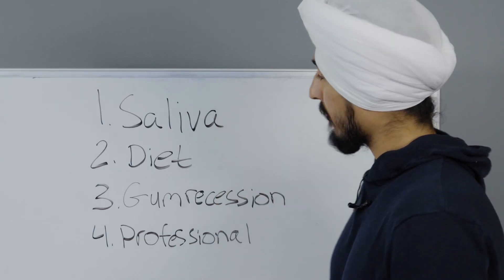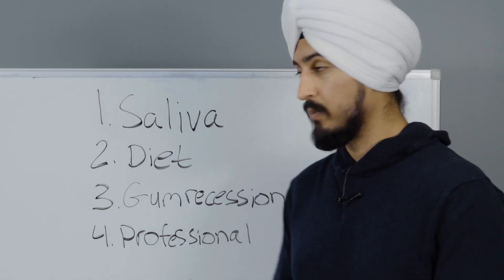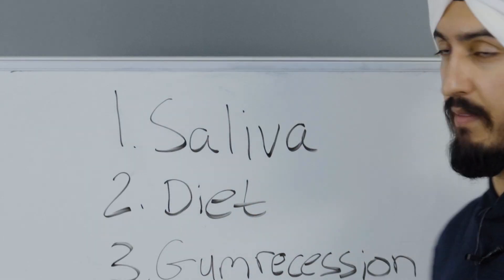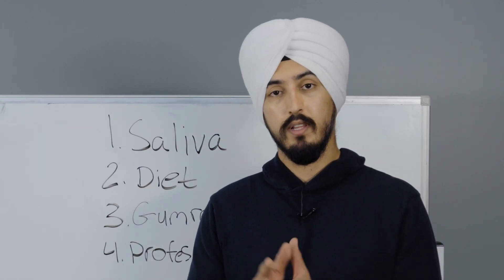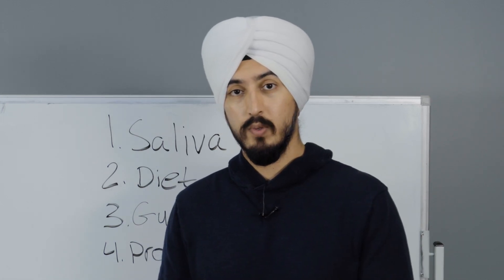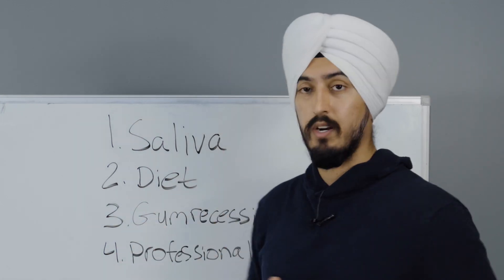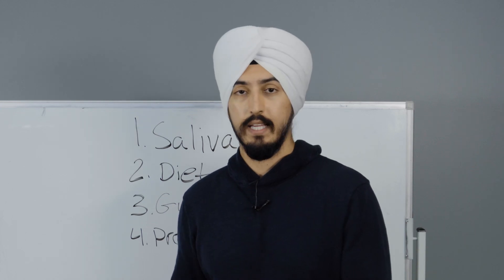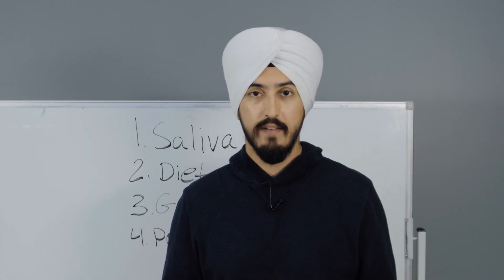Now, what are some other things you can do to prevent and reverse cavities that are just starting? Number one is to focus on your saliva. We talked about how saliva is really good at remineralizing your teeth — it has a lot of important minerals and is great at cleaning our teeth. So we want to optimize our saliva production. One way is to start chewing gum more. Anytime you chew anything, you stimulate saliva production, so a good idea is to chew gum after your meals.